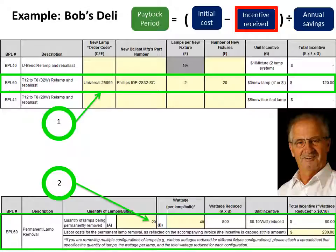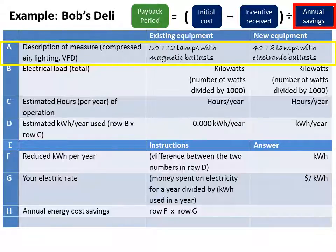Second, he calculates the incentive he will receive for permanent lamp removal since he's going from three lamp fixtures to two lamp fixtures. Since he's removing one T12 from each fixture that will not be replaced by a T8 lamp, and there are 20 fixtures, this equals a quantity of 20 lamps being permanently removed. Then Bob enters the wattage per lamp, which is 40 watts for each T12 lamp removed.